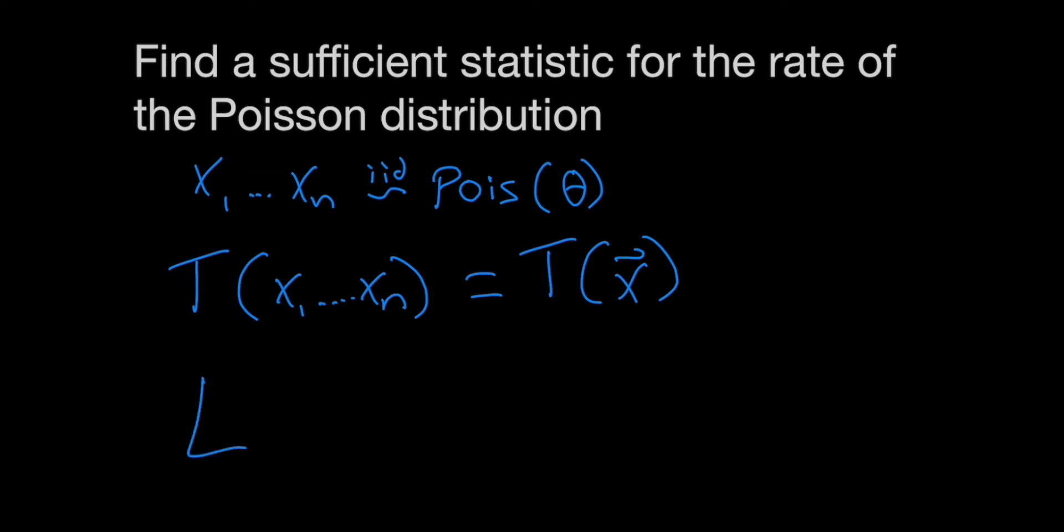That's the likelihood of theta given our data is the product from i equals 1 to n of theta to the xi e to the minus theta over xi factorial.